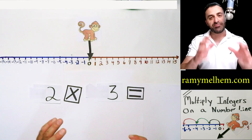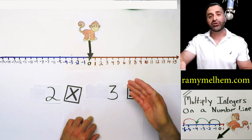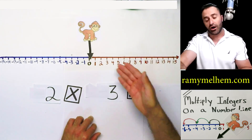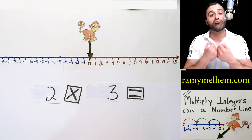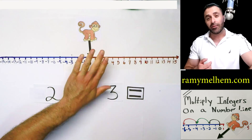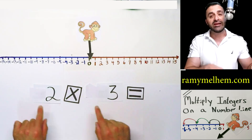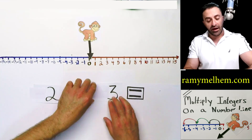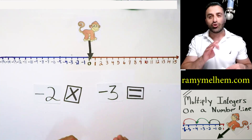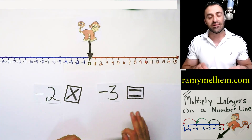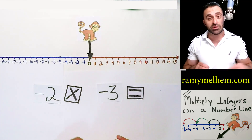Hi, everybody. Today we've got a special guest joining us in our journey into how to multiply integers on a number line. But before we start, I have to show you something really important. I don't want the monkey to hear. You see, beside each number I've got these negative symbols covered up. I don't want him to see them because he's never seen them before, and I don't want him to get scared early on.